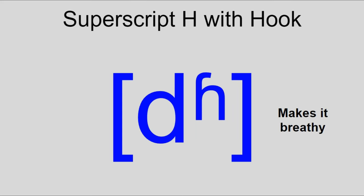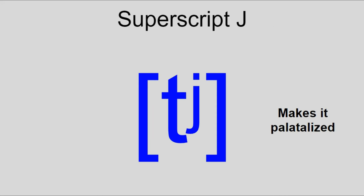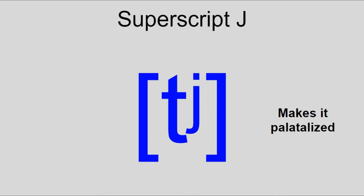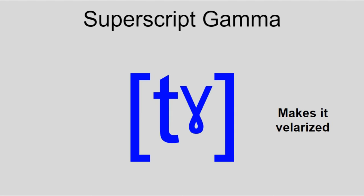A superscript H indicates aspiration. For voiced aspiration or breathy consonants, the curvy voiced version is used instead. The superscript J indicates palatalization, the superscript W indicates labialization, and the superscript gamma indicates velarization — a feature found in Irish.